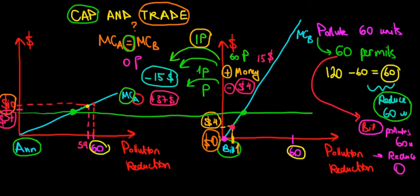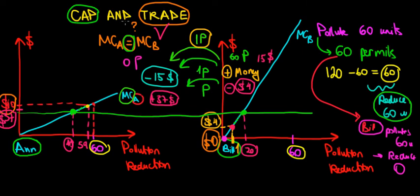For the sake of the example, the 60 units of pollution reduction will be allocated as follows: N reduces 40 units and Bill reduces 20 units. The government requirement is satisfied, and the marginal costs are equal — achieving cost efficiency. Since we are trading permits, this flow implies an exchange of money, and that money is the price of the permit. The equilibrium price corresponds to the point where marginal costs are equal.